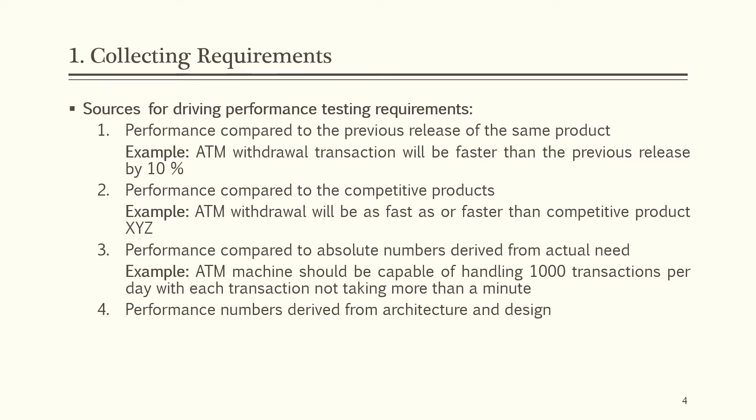The third source is performance compared to absolute numbers derived from actual need. For example, the ATM machine should be capable of handling 1000 transactions per day with each transaction not taking more than a minute. The fourth is performance numbers derived from architecture and design. From system architecture and design diagrams, we can understand the data flow of the system, and use case diagrams help in understanding user interaction with the system. Through these diagrams, we can have an estimate of the expected load on the system.